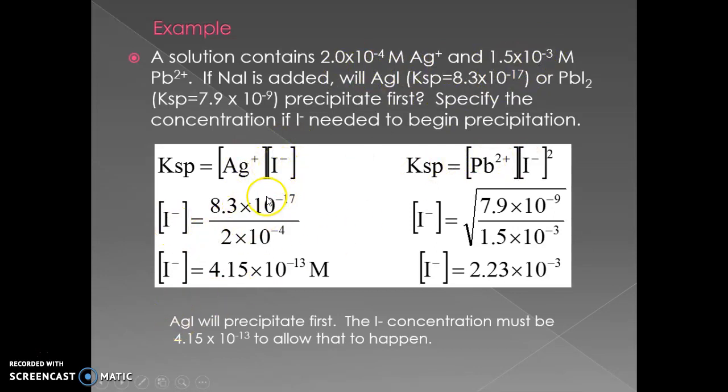So one I minus, very simple calculation. You need 4.15 times 10 to the negative 13 I minus to start to get all that silver to precipitate out. However, with the lead...